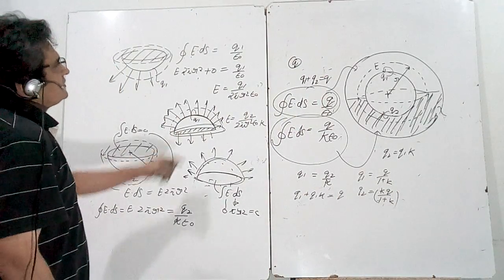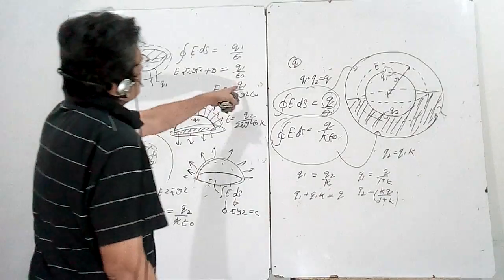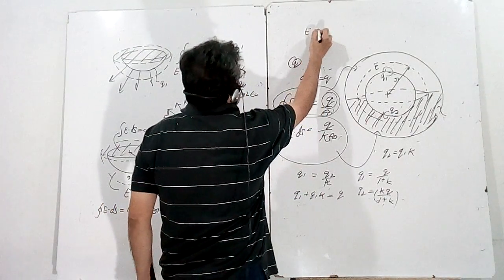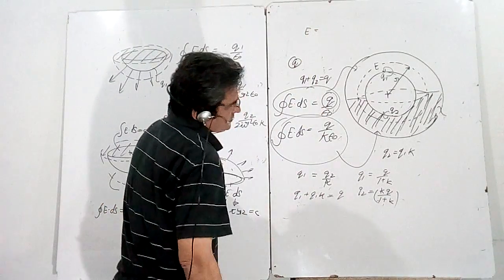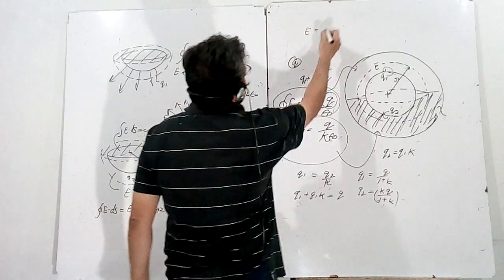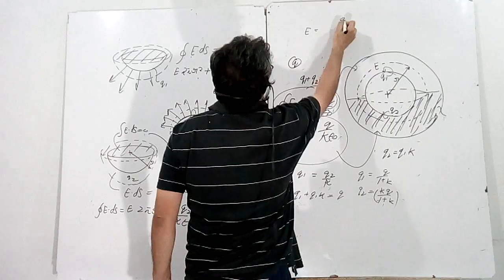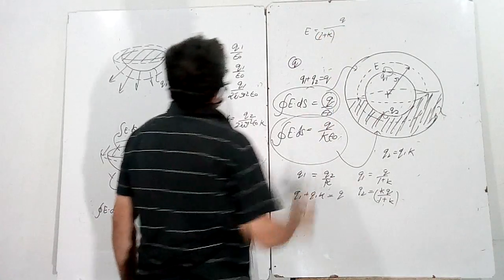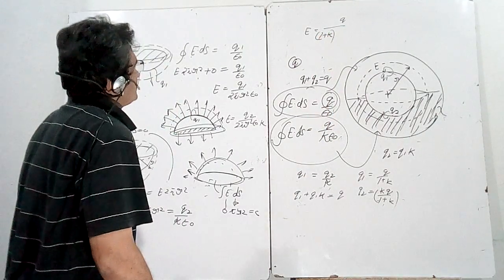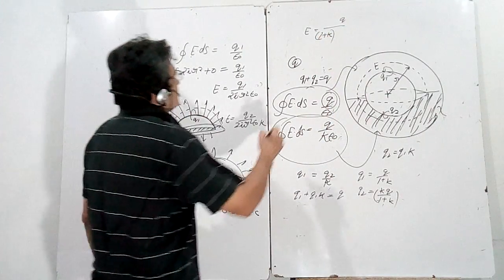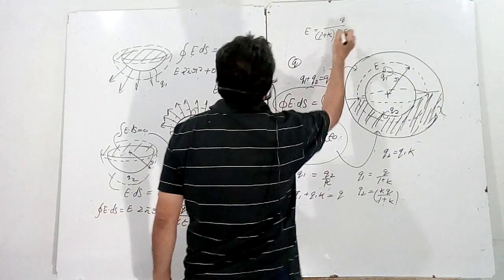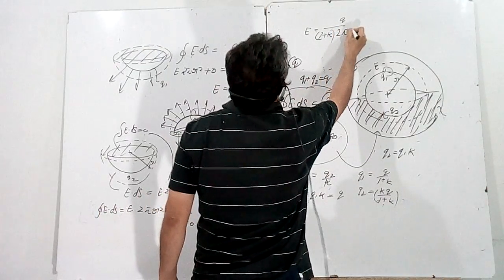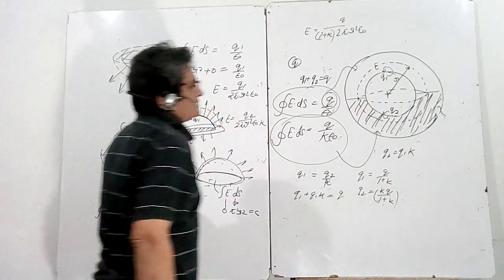Substituting q1 back into the expression for the electric field, we get: E = q1 / (2πr²ε₀) = Q / [(1 + k) · 2πr²ε₀]. This is the electric field at any point at distance r between the two electrodes.